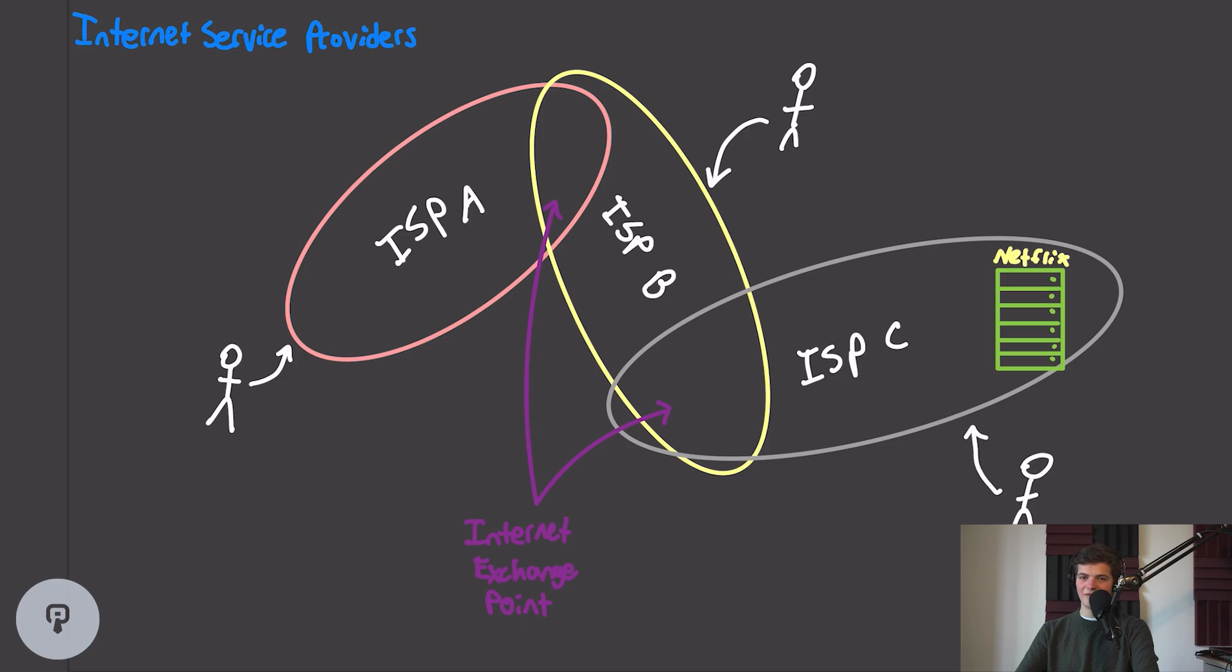This is a long journey for the internet traffic, and would likely introduce a lot of latency and slow speeds if every single user had to do this. Furthermore, ISP A and ISP C could even be on different continents, and there would have to be some intercontinental fiber optic cables connecting these internet service providers, and that would introduce additional latency to this process.